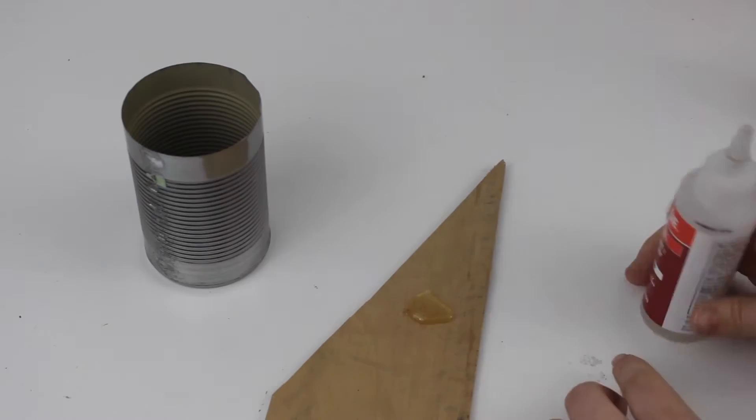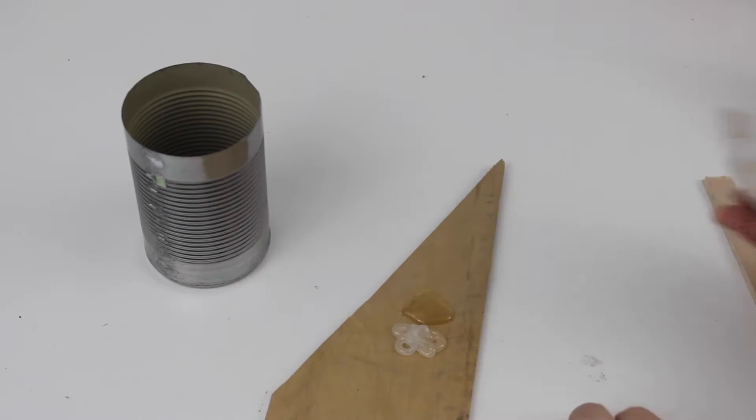Start by mixing up your two-part epoxy. I usually just do this on a scrap piece of wood and use the scrap wood to stir the epoxy together.